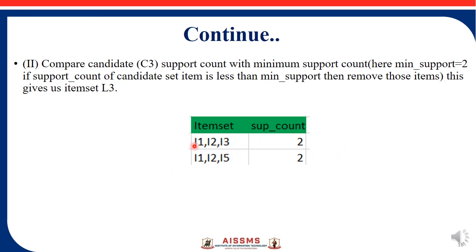This gives us the final association rules. The item sets I1, I2, I3 have a support count of 2, and the next item set I1, I2, I5 also qualifies. Thank you.